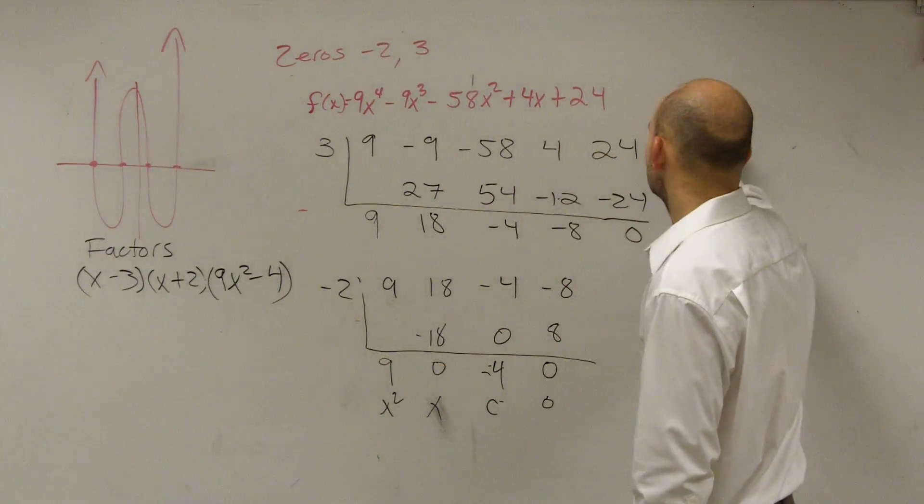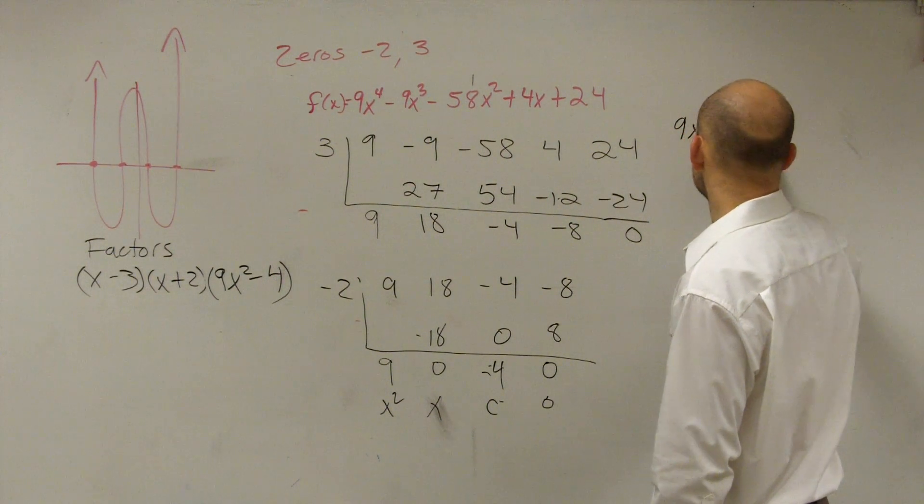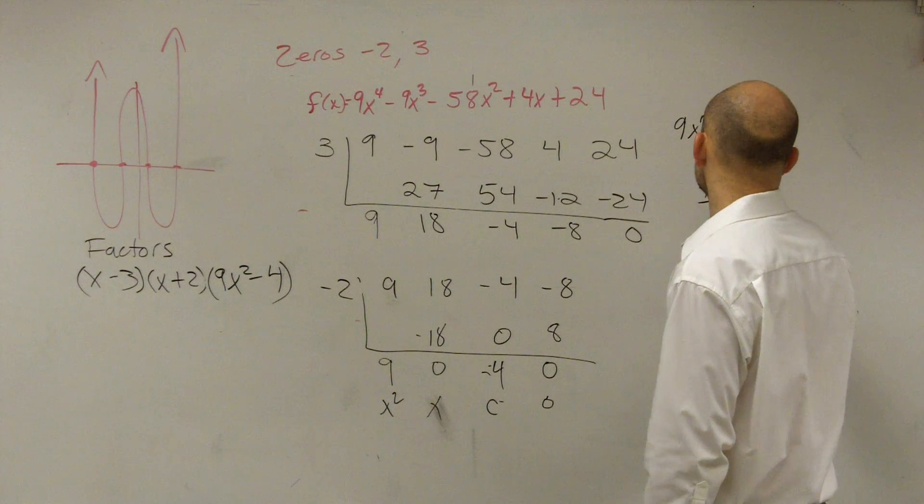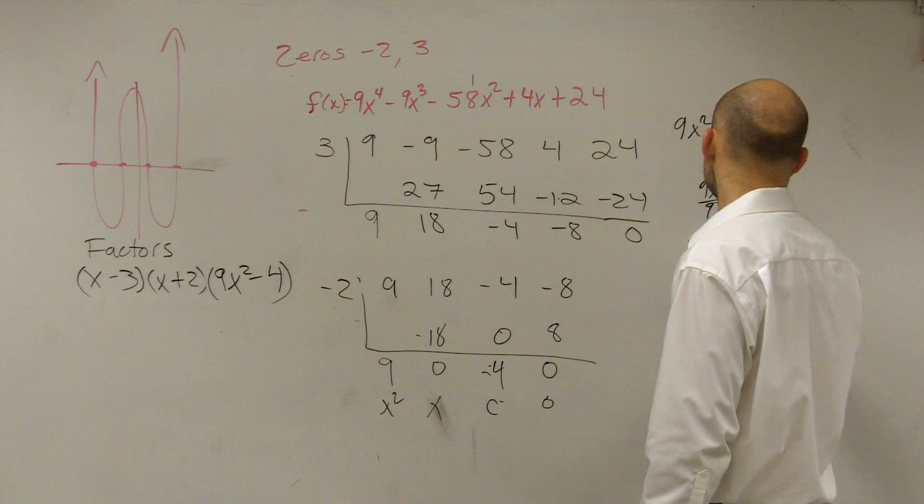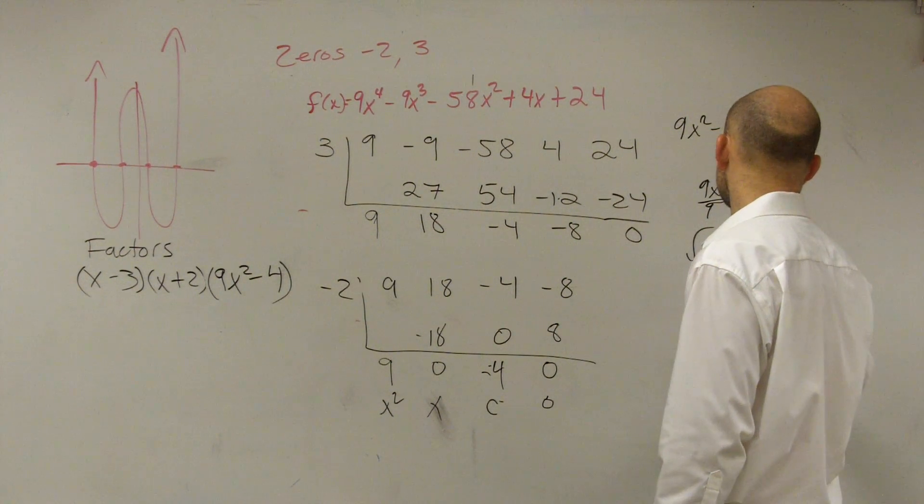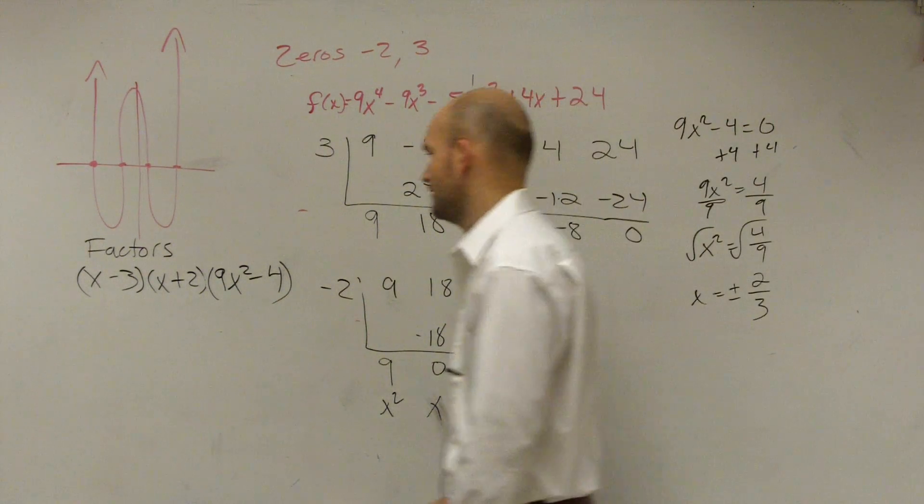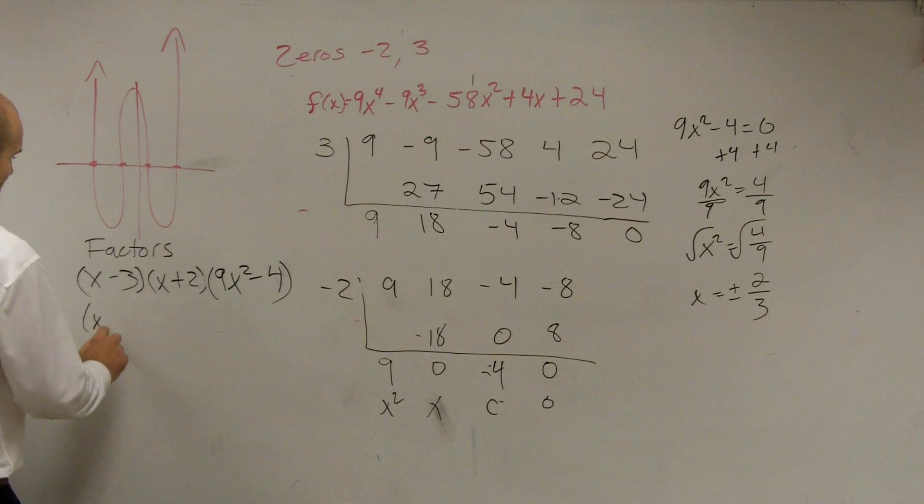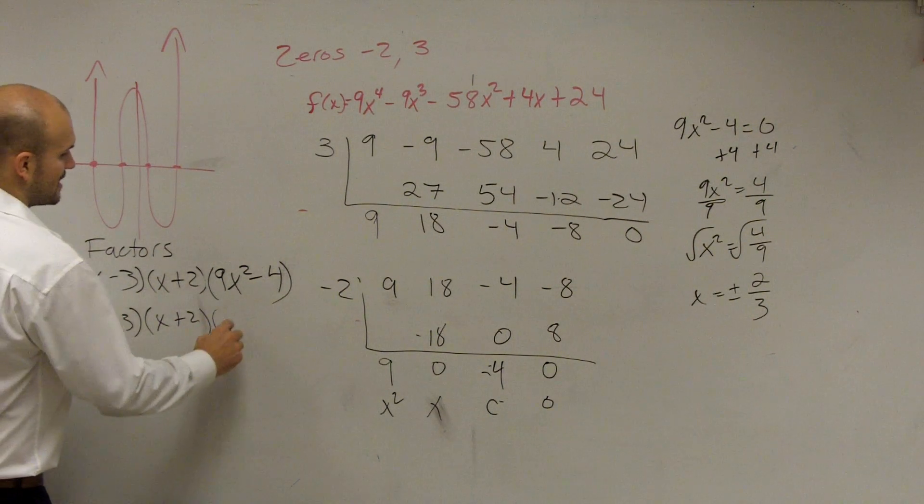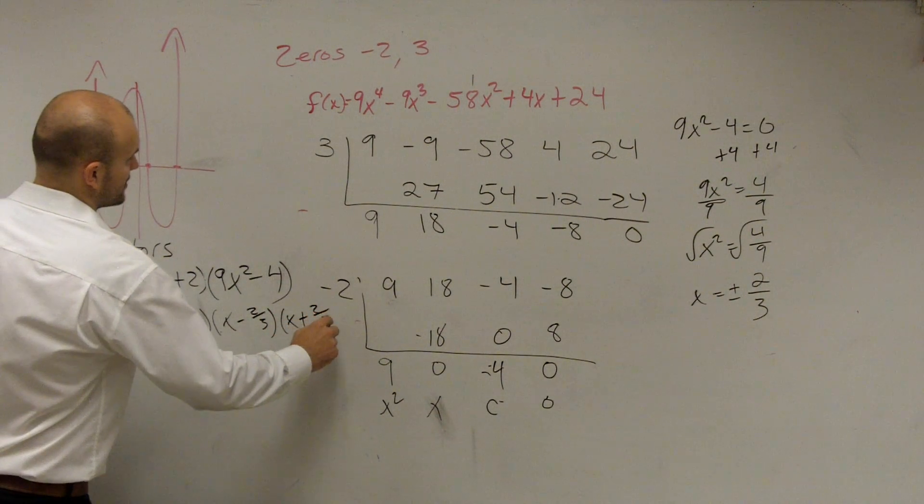So it's actually plus or minus the square root of... 2 over 3. 9x squared minus 4 equals 0. Add 4 to the other side. 9x squared equals 4. Divide by 9. x squared equals 4 over 9. Root. x equals plus or minus 2 over 3. Okay. So we can write this as x minus 3, x plus 2, times x minus 2 thirds, times x plus 2 thirds.